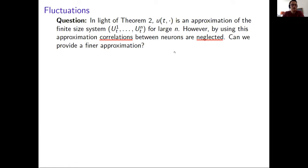And as I mentioned in the very beginning of my talk, by doing this mean field approximation, you treat the neurons at the limit as if they were independent. Meaning that if you take the correlation of two pairs of neurons and study the correlation as a function of n, you see that at the limit, this will be zero. And then a natural question at this point is, can you provide a finer approximation? And that's why we study fluctuations.